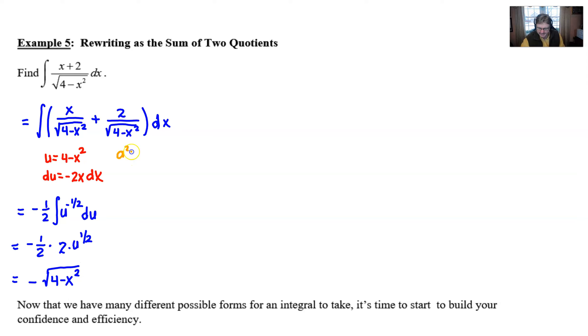And then we have the first one taken care of. Now you can direct your attention over to this guy. Hopefully you realize that if a squared is 4, a would be 2. If u squared is x squared, u would be x.